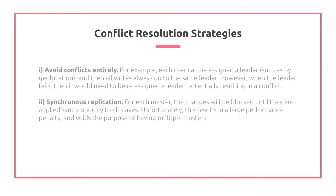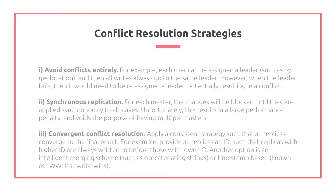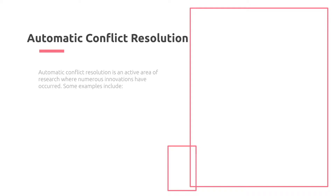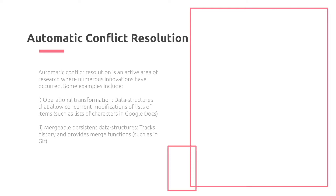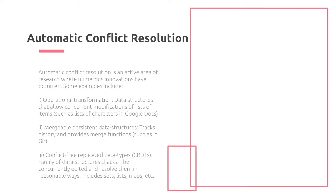We can use synchronous replication, where for each master the changes are blocked until applied synchronously to all slaves. Unfortunately, this results in a large performance penalty and voids the purpose of having multiple masters. We can also use converging conflict resolution: apply a consistent strategy so that all replicas converge to the same result. For example, assign all replicas an ID such that replicas with higher IDs are always written to before those with lower IDs. Another option is intelligent merging schemes such as concatenating strings or timestamp-based resolution, known as last-write-wins. Automatic conflict resolution is an active area of research, with several techniques and data structures available.